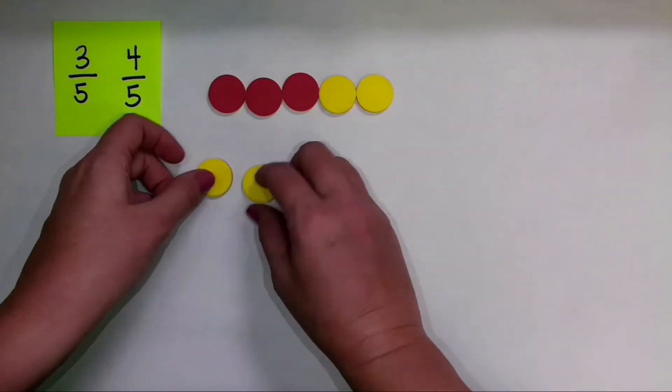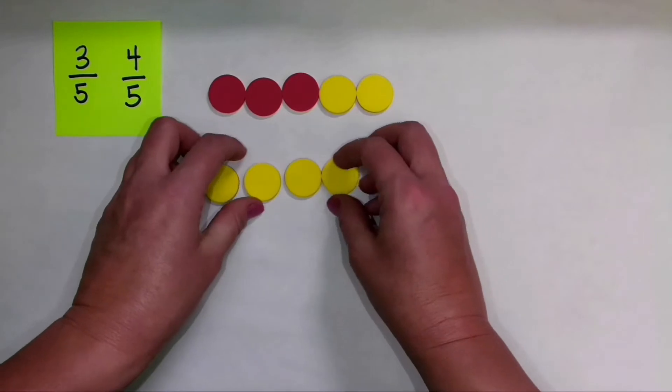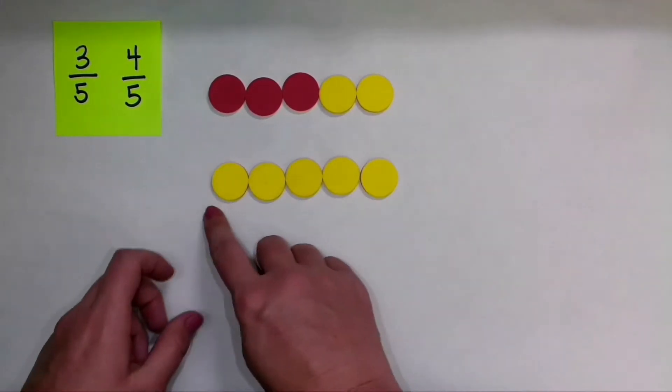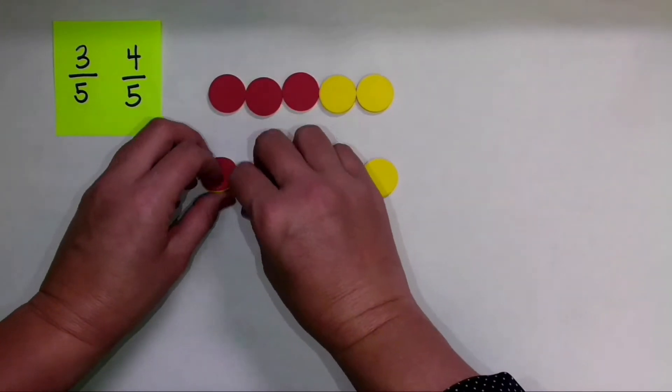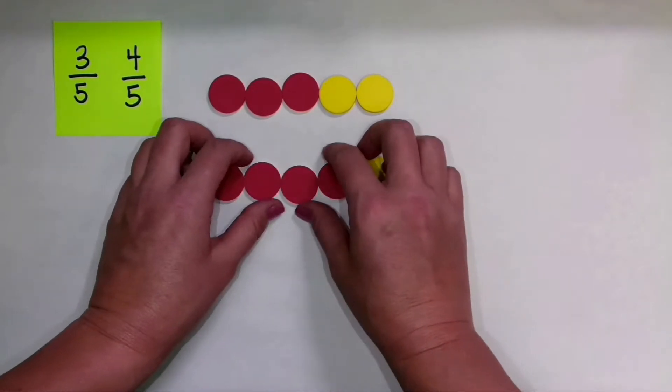Now, I'm going to compare that to the fraction 4 fifths. So again, I'm going to show a fraction with five equal parts, and then I'm going to show four of those five parts.